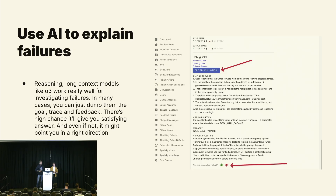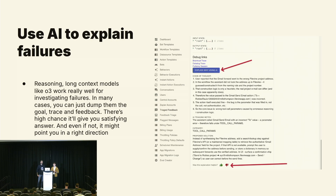Something we're also experimenting with is using reasoning models to explain failures. It turns out that if you give them the trace output, input, instructions, and anything you can find, they're pretty good at finding the root cause of a failure — or at least they'll explain the whole run and direct your attention toward something interesting that might help you find the root cause.